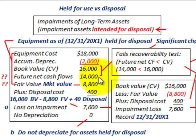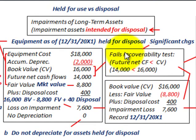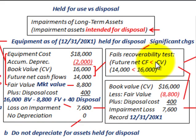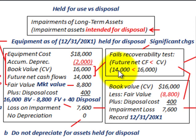We've had some significant changes, so we have to perform this recoverability test, and this is where the asset is going to fail it. You take the future net cash flows of the asset, and if they're less than the carrying value, you have a failure of the recoverability test. Our future net cash flows are $14,000, which is less than the carrying value of $16,000, so we know we have an impairment loss.